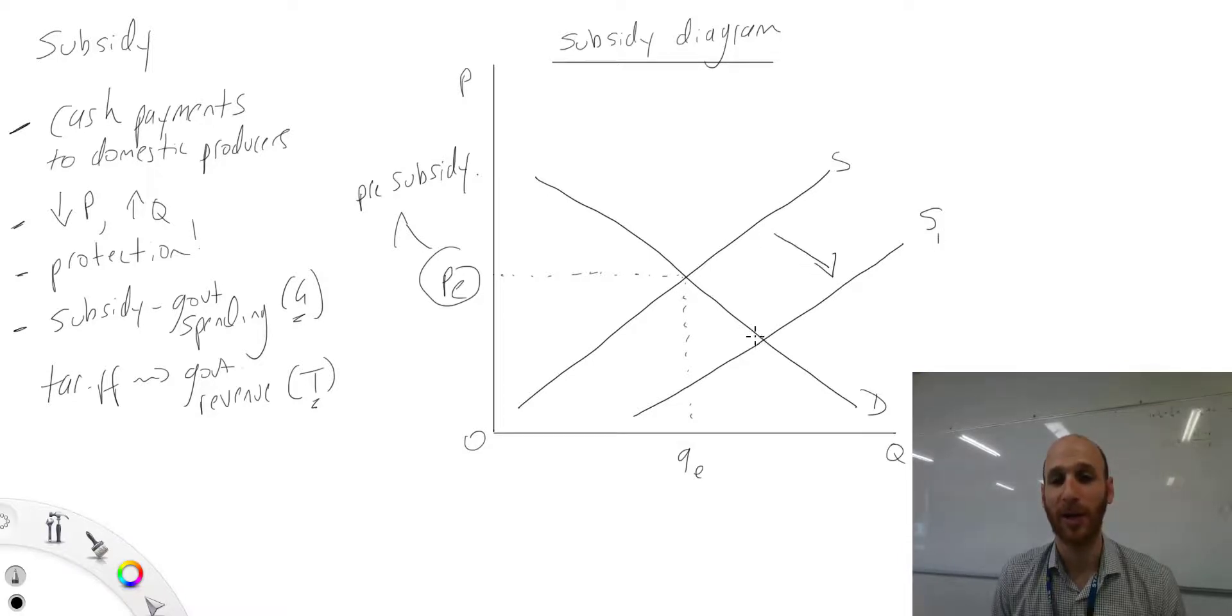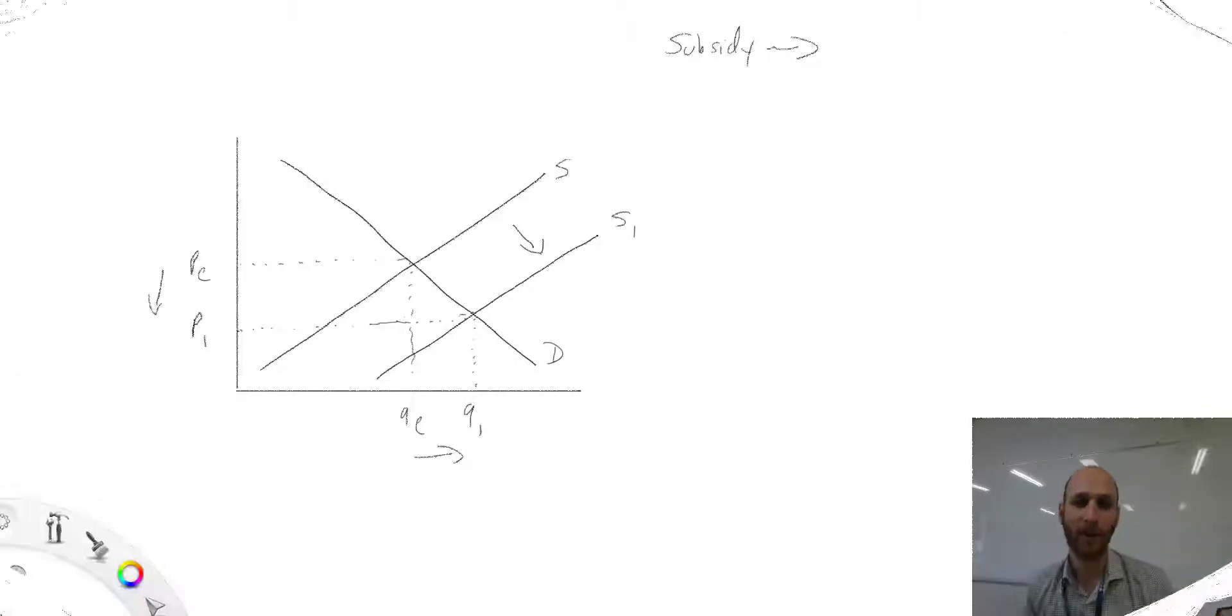If the subsidy has given money to producers, which allows them to reduce their prices and also produce more - that should be Q1 - the impact of the subsidy here is a reduction in price and increase in quantity.